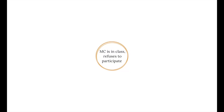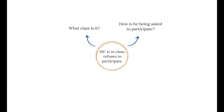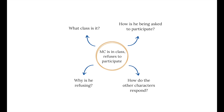Let's look at our first event: MC is in class and refuses to participate. The questions I might ask: What class is it? How is he being asked to participate? Why is he refusing? Has something happened at home that put him in a bad mood? Does he not like this teacher? Does he hate this class? And how do the other characters respond — his teacher, his classmates? Answering questions like those can really help you flesh out a scene and see how it plays out in your mind. You can then add those details to the next draft of your outline.